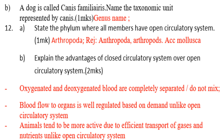Advantages of closed over open circulatory system: number one, oxygenated and deoxygenated blood are completely separate and do not mix; number two, blood flow to organs is well regulated based on demand; number three, animals tend to be more active due to efficient transport of gases and nutrients; number four, blood circulates over longer distances at a faster rate due to high blood pressure.